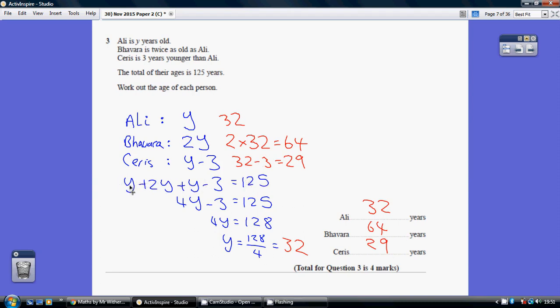So, gather up your Ys, well that's 1 and 2 and 1, 4Y take away 3 is 125. Add 3 to both sides gives us this, divide by 4 and we get Y being 32.